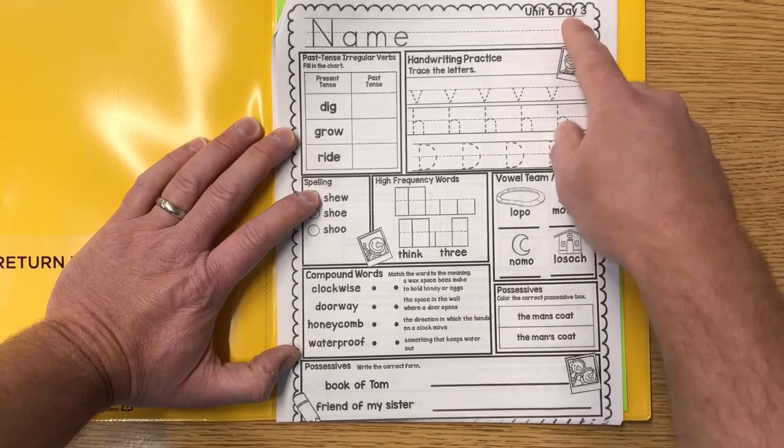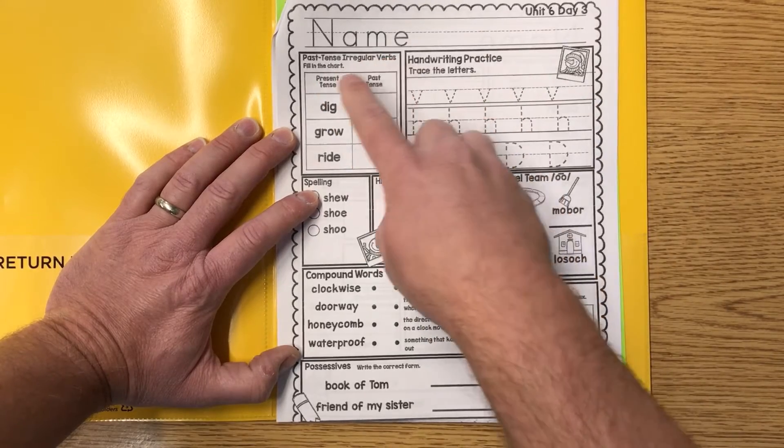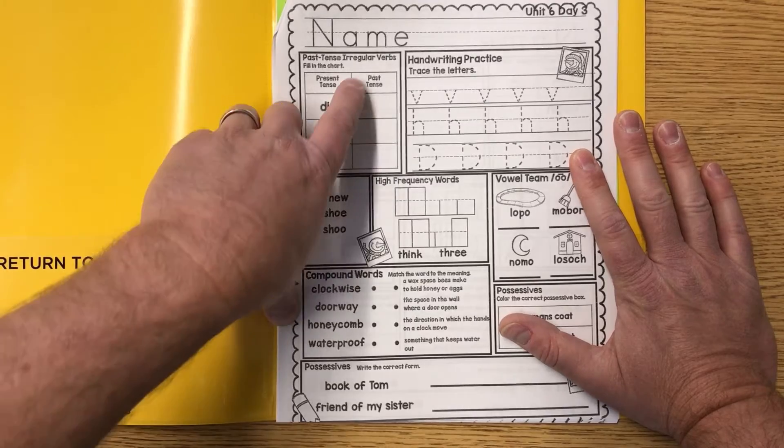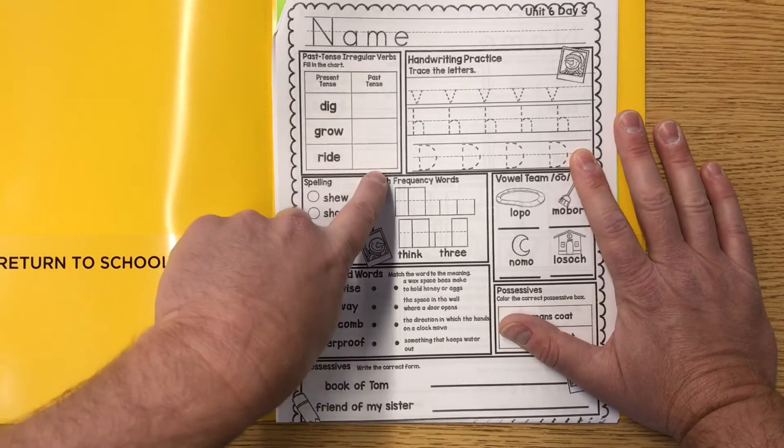Let's go ahead and look at number three here. Day three, page three. Name neatly on the line, please. Past tense irregular verbs. Here's some more. Fill in the chart. Present tense is dig, write the past tense. We also have grow and ride. Fill those out.